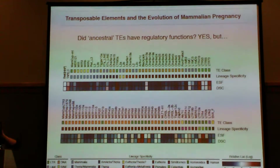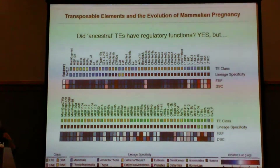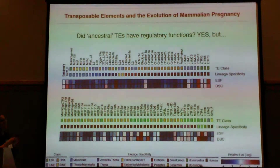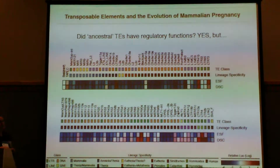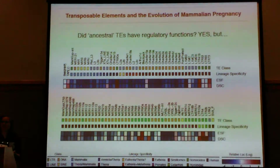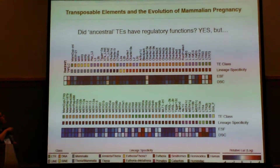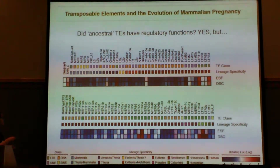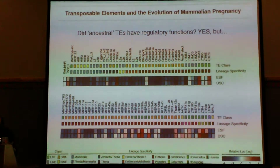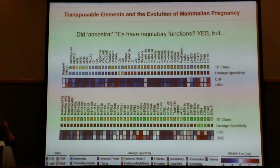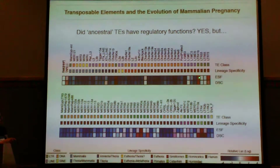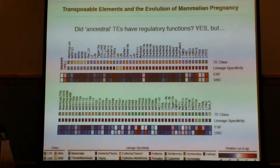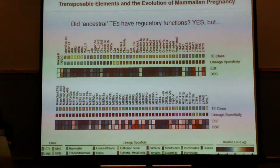This is what my data looks like. Each box represents the mean of six replicates. The first row in both parts represents endometrial stromal fibroblasts, and the second row the decidual stromal cells — the progesterone-exposed ones. The first column is my negative control, a luciferase vector with no transposable element construct. The second column is my positive control, a known progesterone-responsive enhancer in decidual cells. Brighter red means stronger enhancer function, brighter blue means stronger repressor function, and white indicates no function.